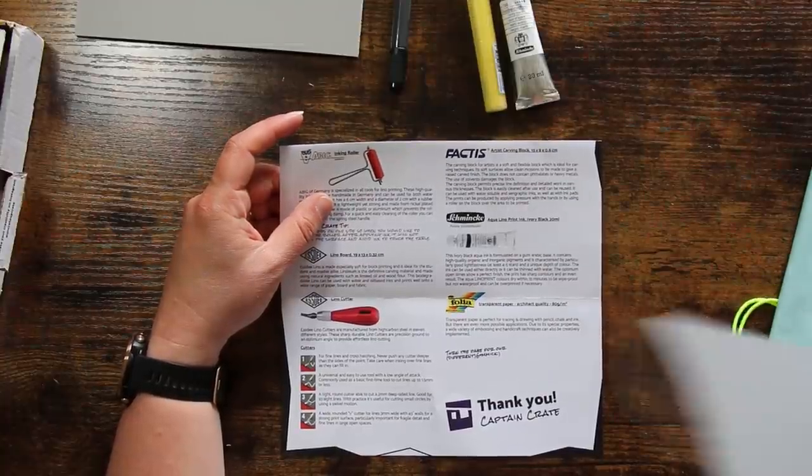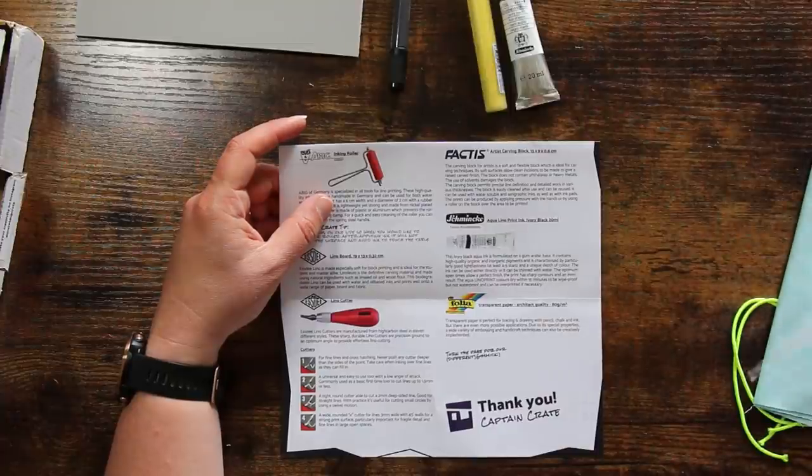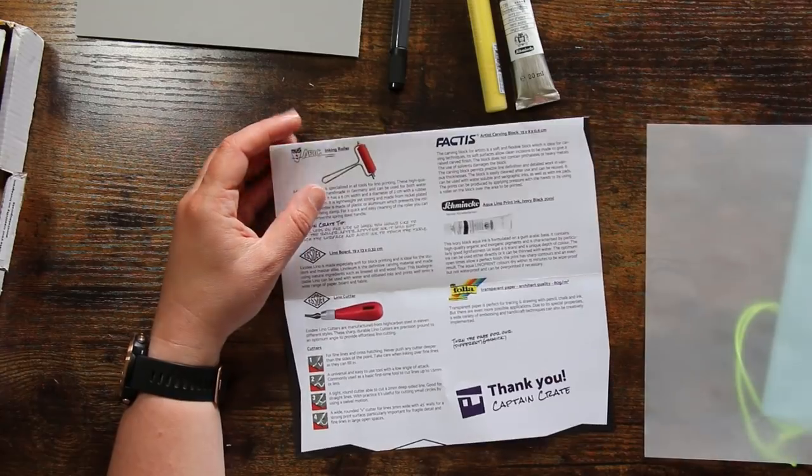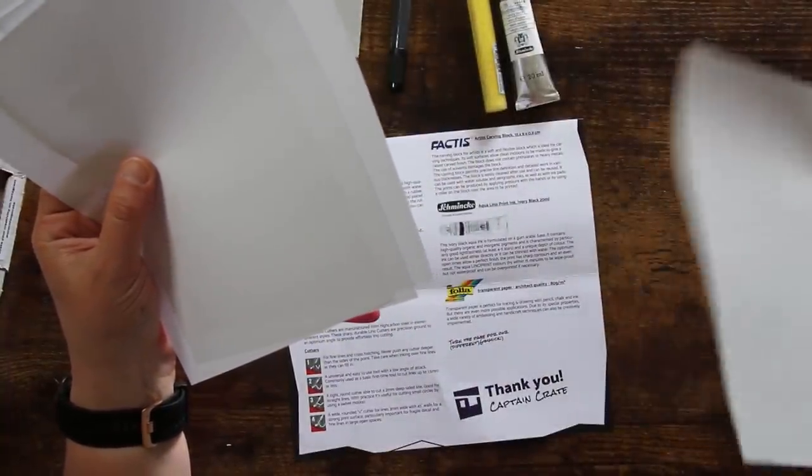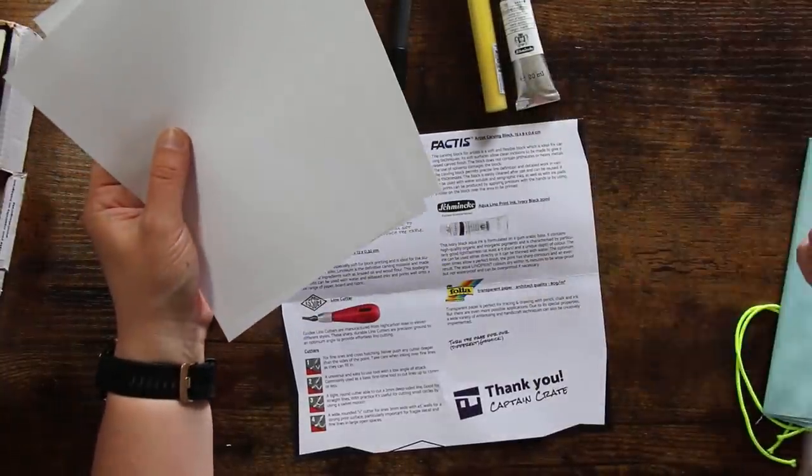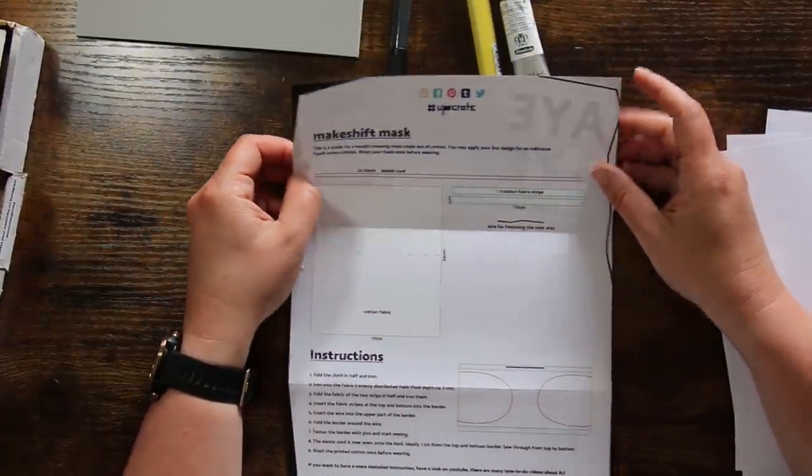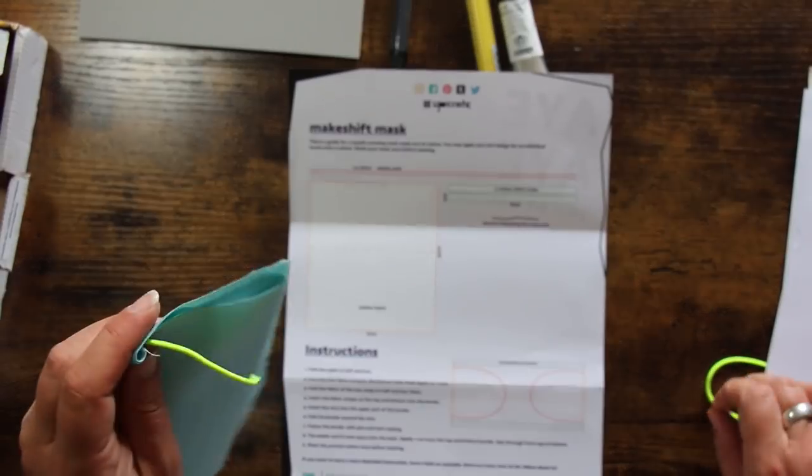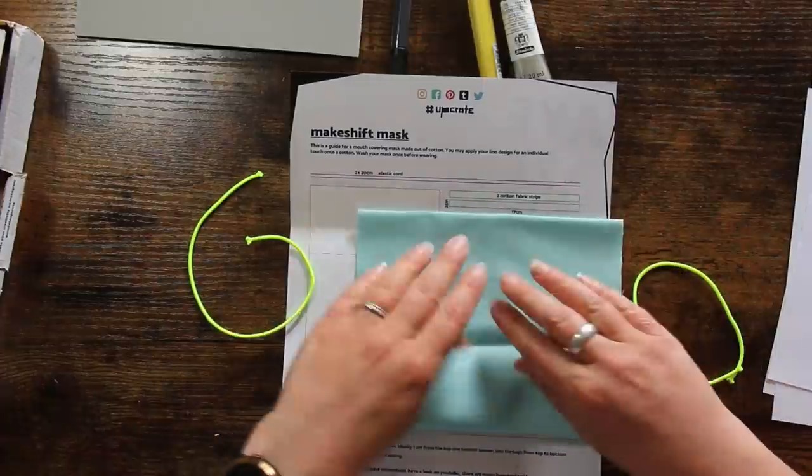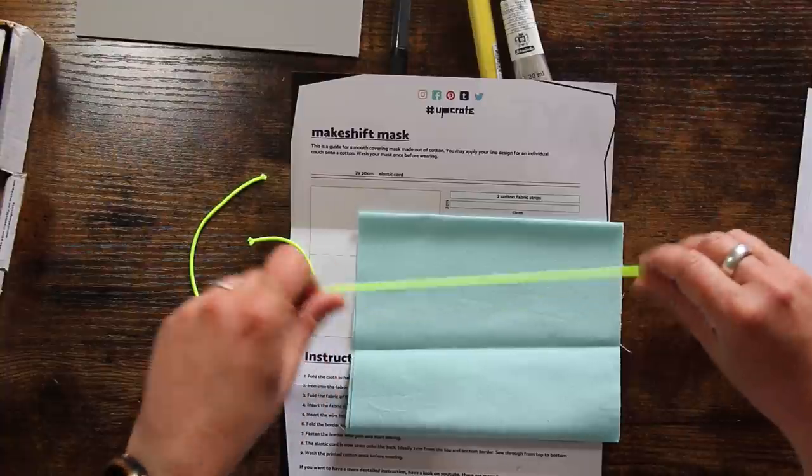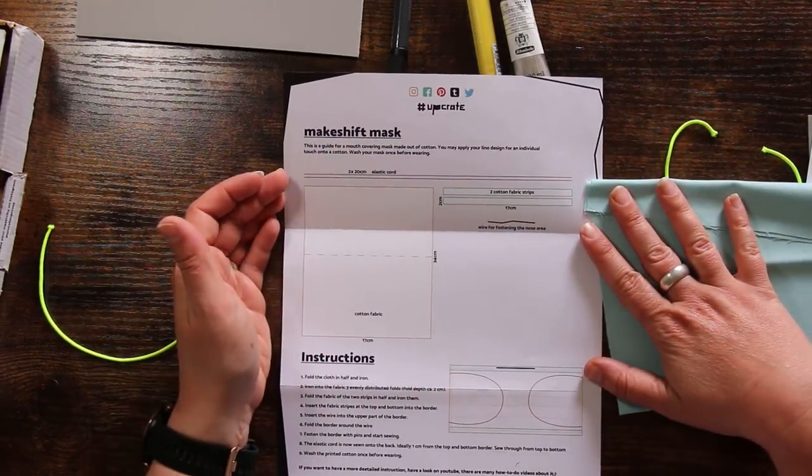The transparent paper. So that's the kind of tracing paper I was talking about. This is all very confusing today. It says turn over as well and okay I got really excited about this but there really wasn't any need to be. This is to make yourself a face mask for protecting you from coronavirus. This is a guide for a mouth covering mask made out of cotton. You may apply your lino design for an individual touch on a cotton. Wash your mask once before wearing. Well okay that's actually very topical and actually quite interesting.